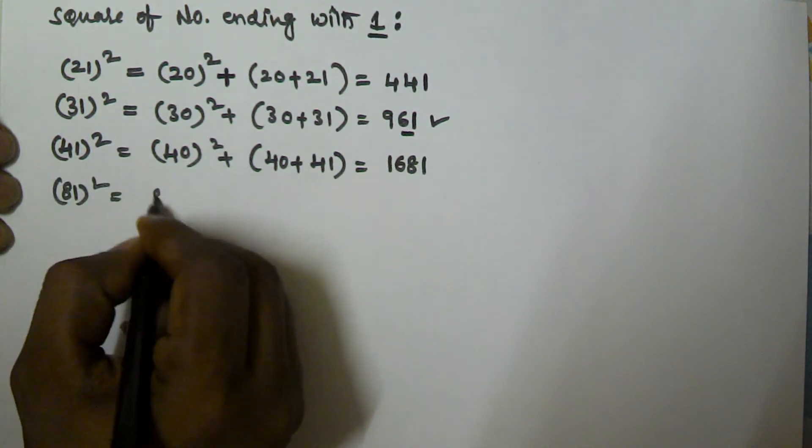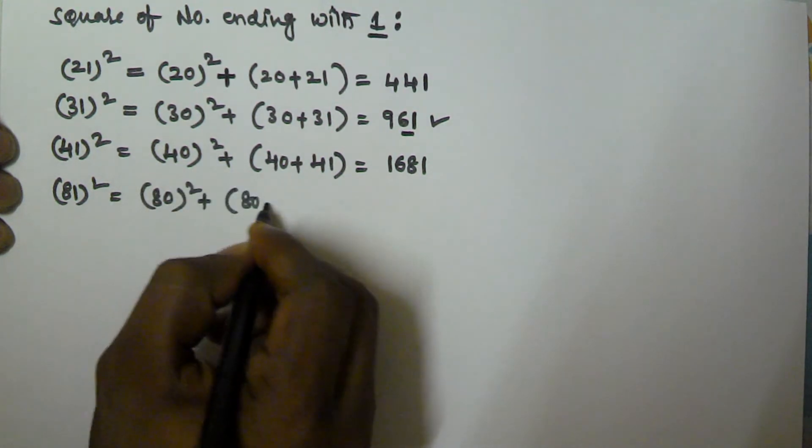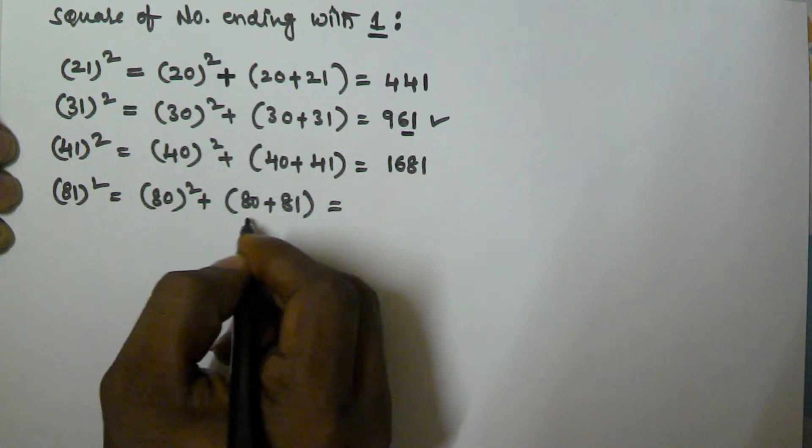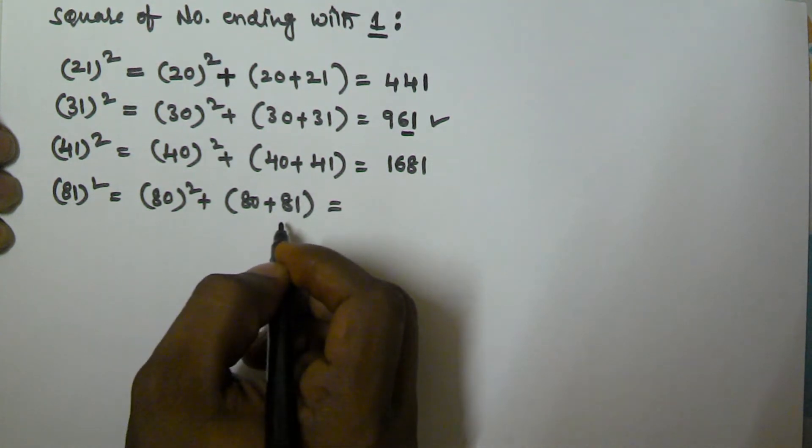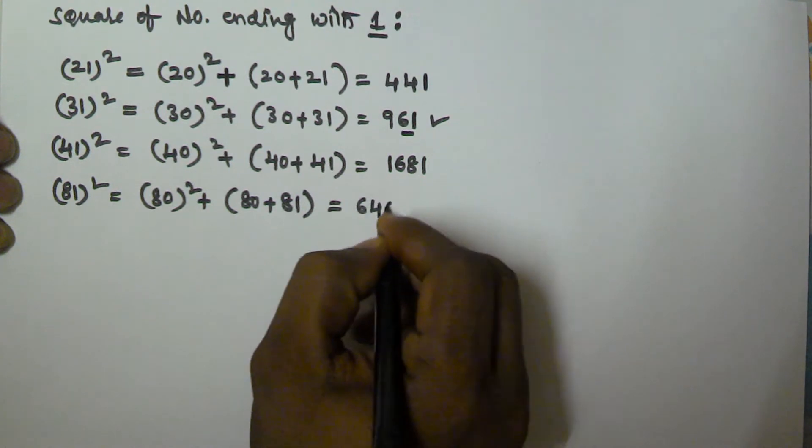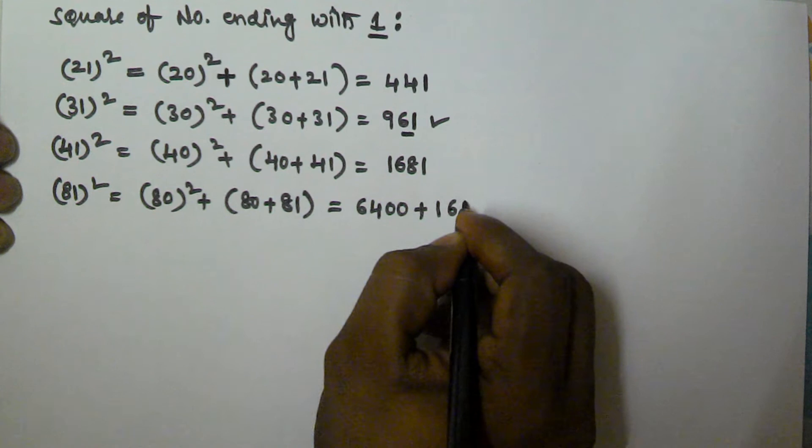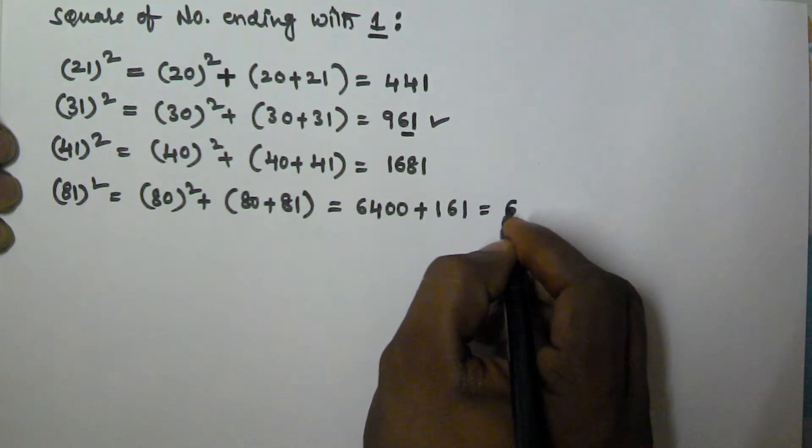So let's take 81 square equivalent to 80 square plus 80 plus 81. So this is going to be 161, 80 square is going to be 6400 plus 161, and this is going to be 6561.